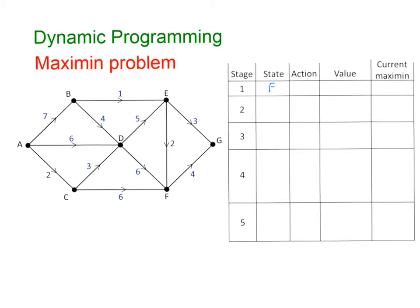Looking at E — I can get to G in one transition from E, but the maximum number of transitions is two: going via F. So E has a stage variable of 2. D has a stage variable of 3. B and C both have a stage variable of 4. And finally, A has a stage variable of 5.